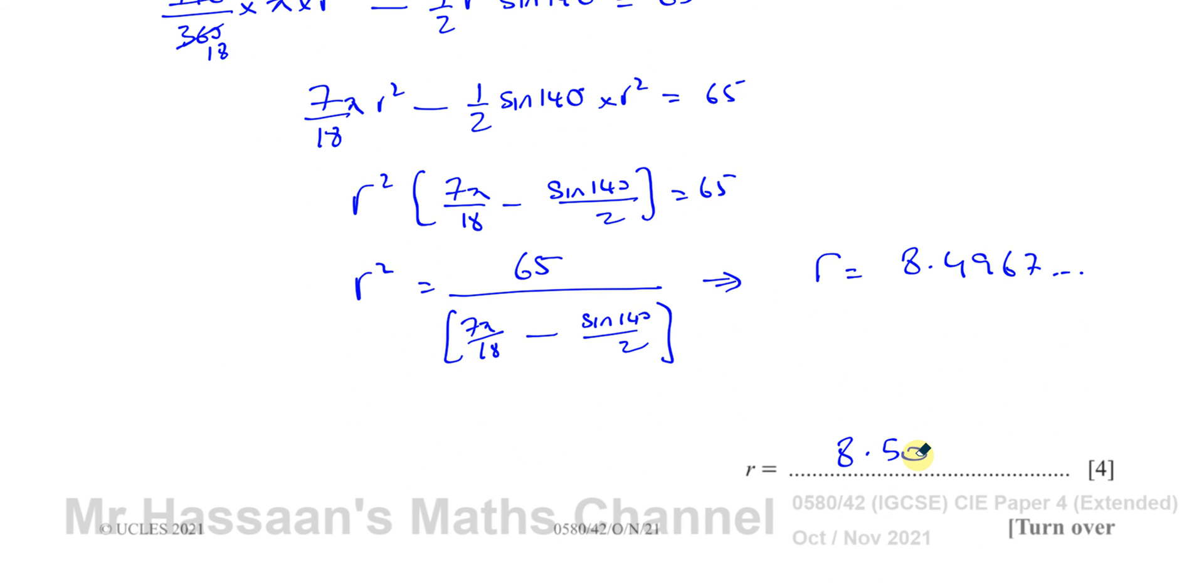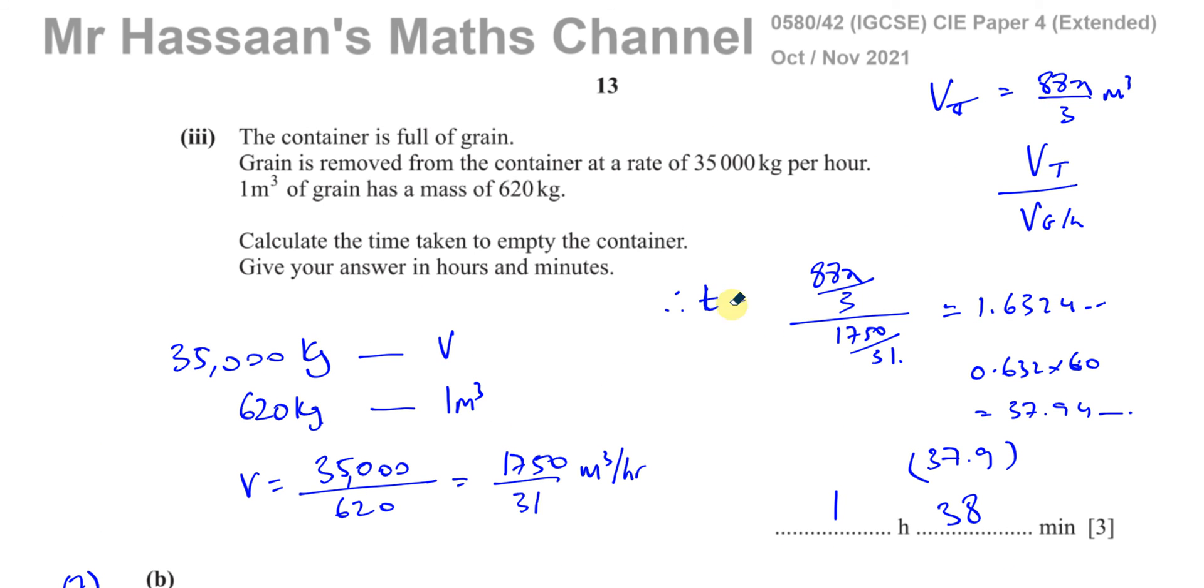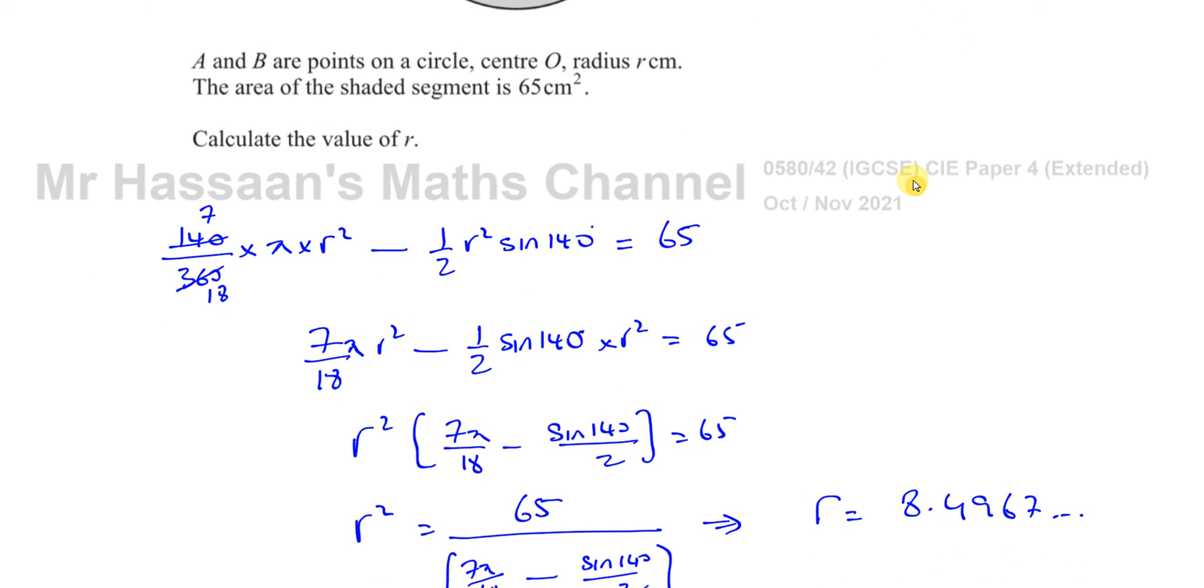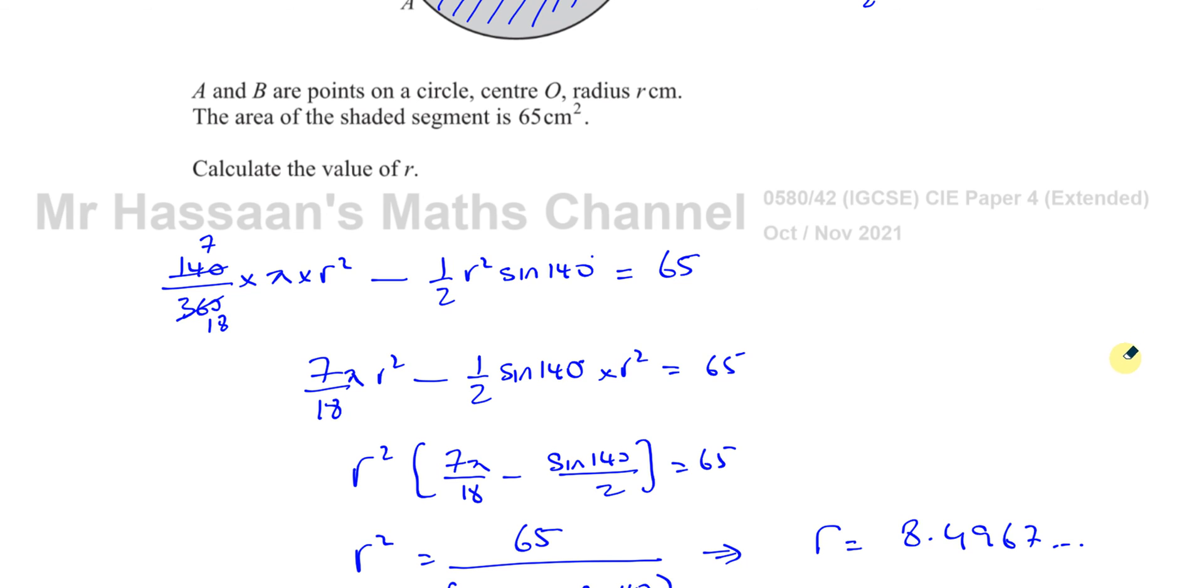That's the answer to this question, which is question part B from this paper, November 2021 Paper 4. Thank you for watching. Other questions from this paper can be found in the playlist that will appear over here. Other questions from this particular topic of circles and area of basic shapes and circles can be found in this playlist over here, and I'll have a general playlist for all of the questions to do with mensuration over here. You can click on this icon to subscribe to the channel if you haven't already done so. Thank you for watching, and see you soon.